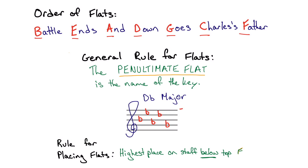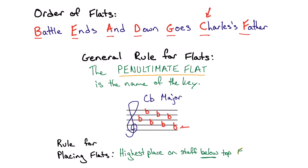Let's look at C♭ major. The penultimate flat is the name of the key, so the second to last flat must be C♭. We start writing flats until we get to C♭: B♭, E♭, A♭, D♭, G♭, C♭ — that's the name of the key, the second to last flat — so our final flat must be F♭. We have to place this F♭ on the space below the top F line, since flats go on the highest place on the staff below the top F, meaning we can't be on the F line itself.